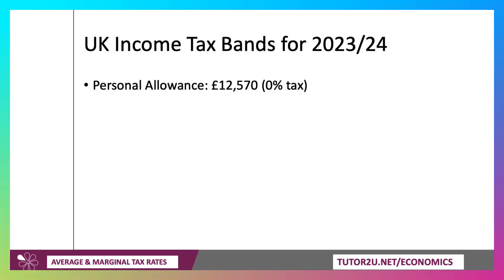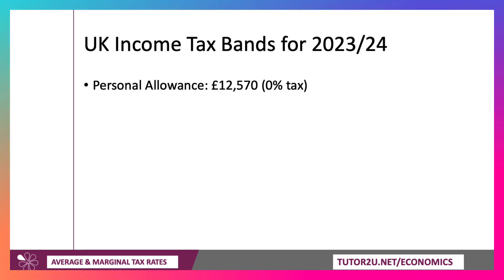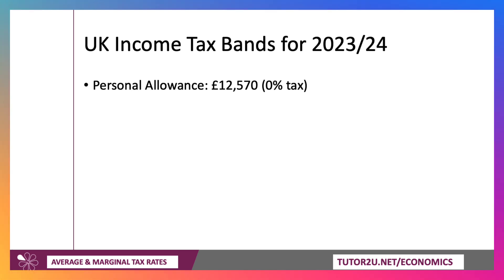Let's have a look at this with a couple of calculations using the tax bands for 2023-2024. Everybody can have a personal income tax allowance — pretty much everybody — of £12,570. That means you can earn £12,570 each year without being liable for any income tax.